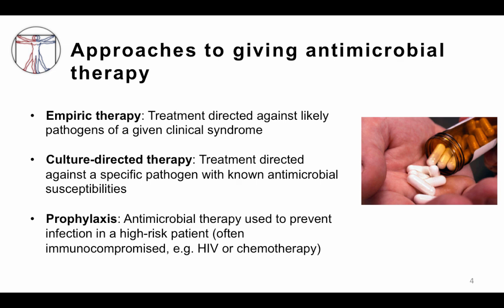The third strategy is prophylaxis — this is when you give antimicrobial therapy to prevent an infection in a patient who doesn't have an infection yet but is at high risk. For example, a patient who is immunocompromised, like a patient with HIV or someone undergoing chemotherapy. Patients with neutropenia from chemotherapy receive antibiotics to prevent infection. Patients with HIV often receive trimethoprim-sulfamethoxazole to prevent Pneumocystis jirovecii pneumonia.